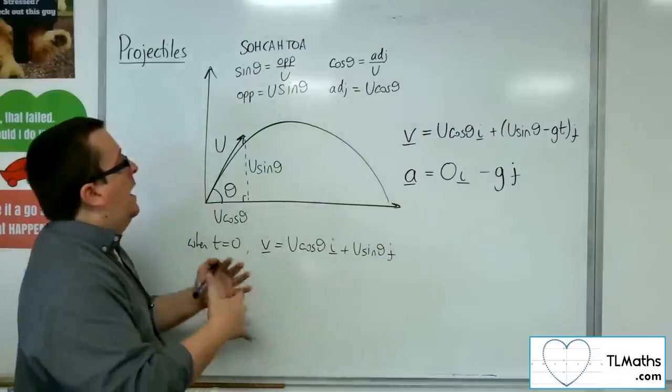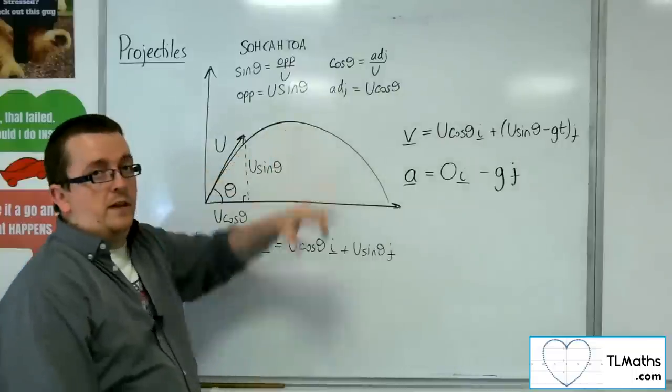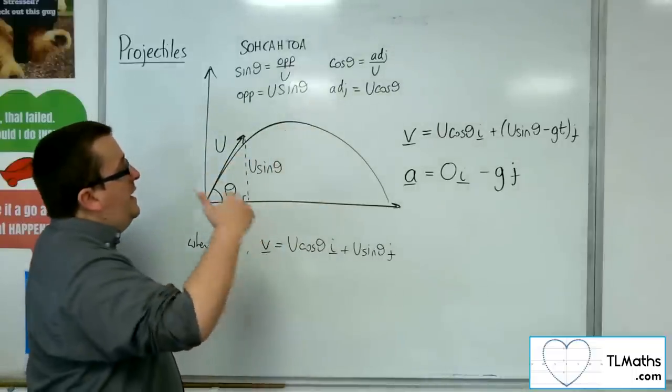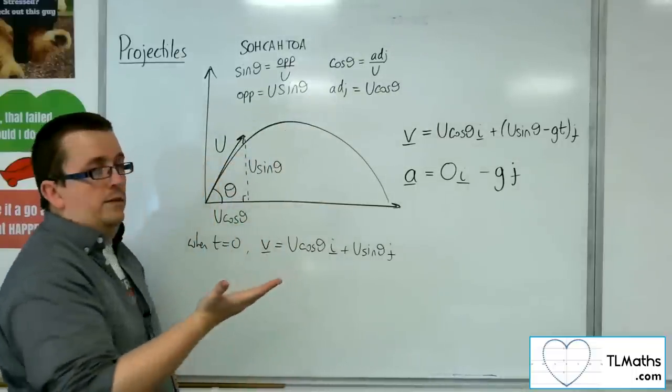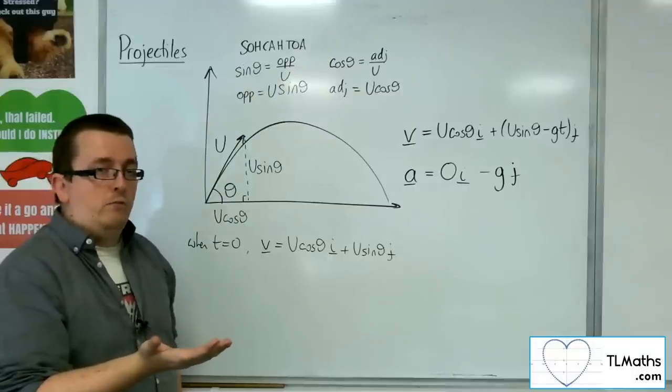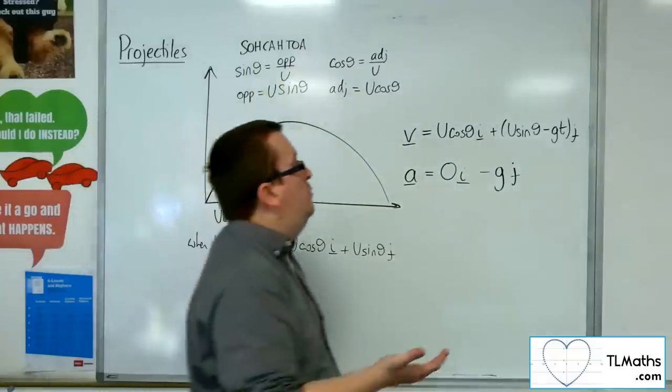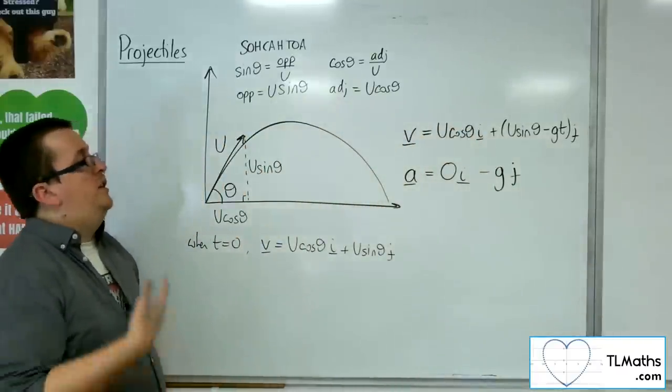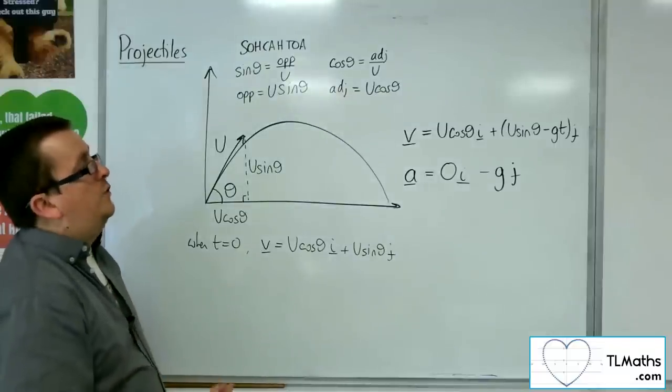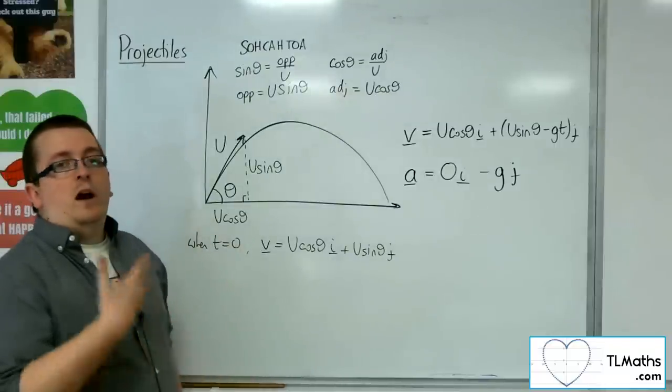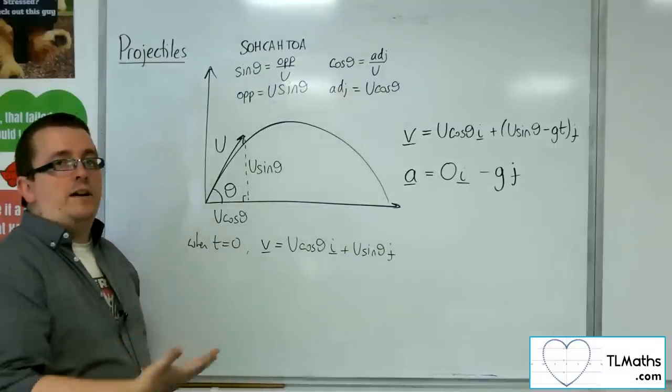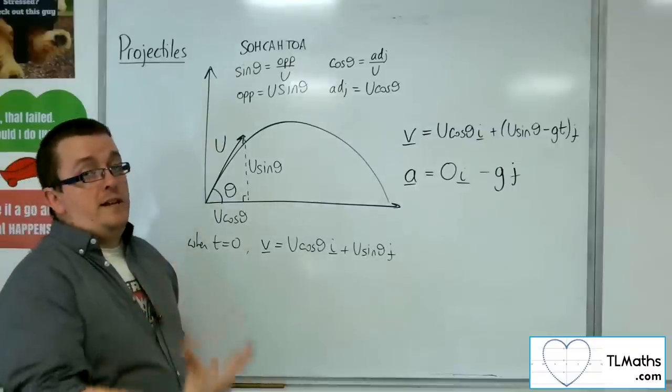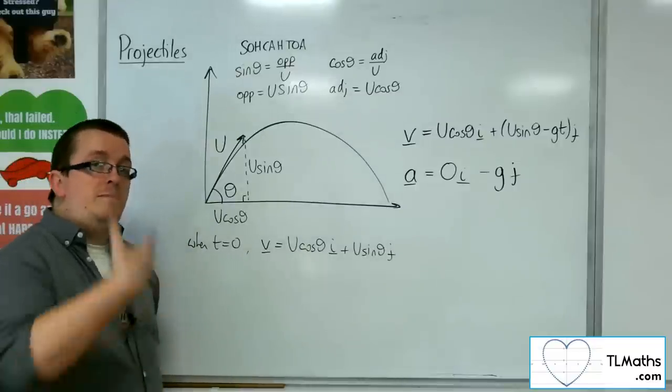So, if you wanted to find, for example, the highest point of the curve, then that would be when the vertical velocity is 0. So, if you put u sine theta take away g t equal to 0, you would be able to solve that equation to be able to figure out the time at which we are at its highest point.